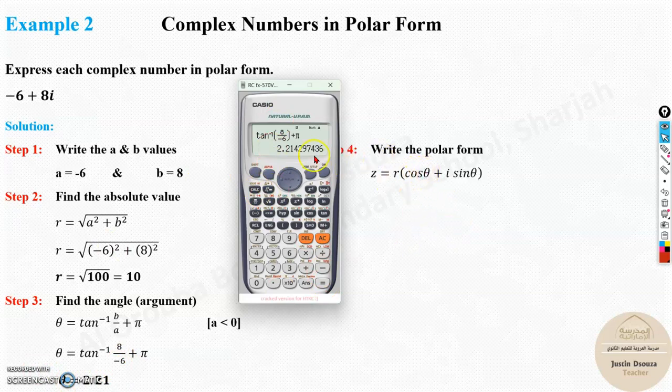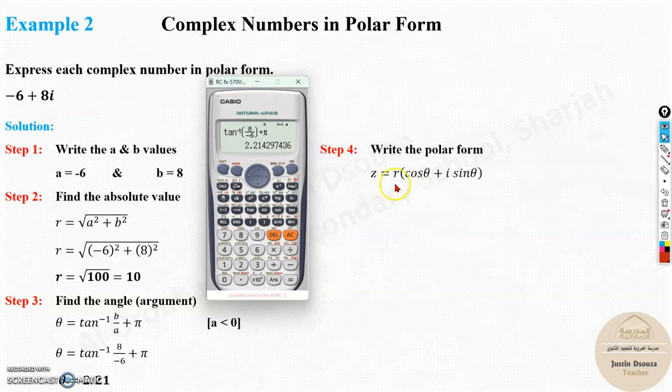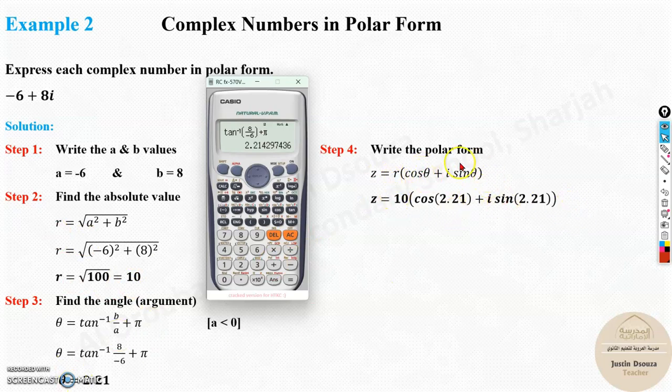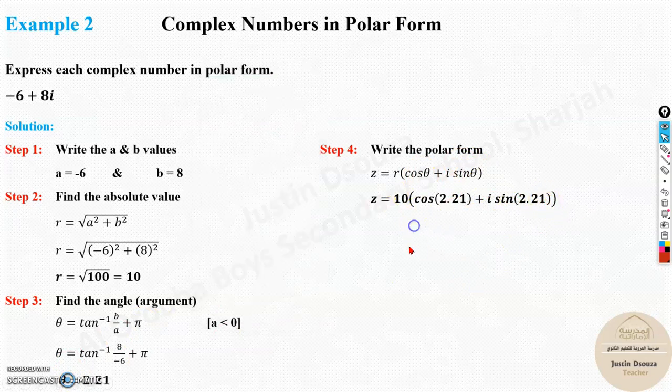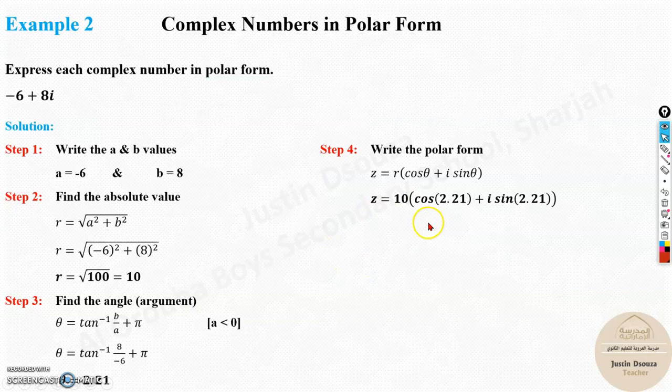So, in the polar form, that is, r of cos theta plus i sine theta, all you need to do is, r value is 10, substitute over here, cos theta is 2.21, and over here, sine 2.21. That is the answer. So, this is the answer for the polar form for this complex number.